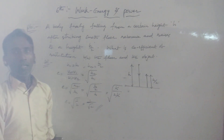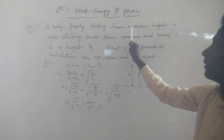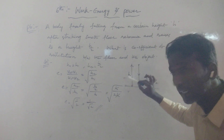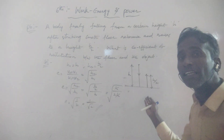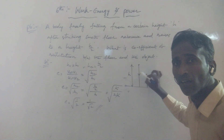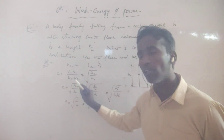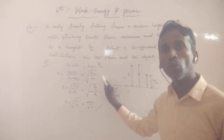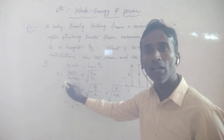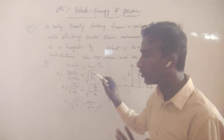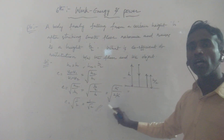The answer is 1 by root 2. 100% you will get this problem. To recap: H1 equals H because the body freely falls from height H. H2 equals H by 2 because after rebound it reaches half the original height. Substitute into E equals under root of H2 by H1. We have two types of formulas: if initial and final velocities are given use the velocity formula; if only two heights H1 and H2 are given, use the direct formula E equals under root of H2 by H1.